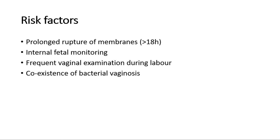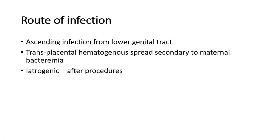The route of infection can be due to ascending infection from the lower genital tract, or it can be transplacental hematogenous spread secondary to maternal bacteremia — spread through the blood — and it can also be iatrogenic, which is infection after procedures done in obstetrics.